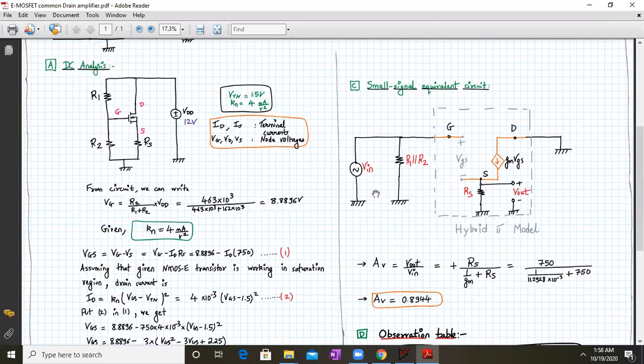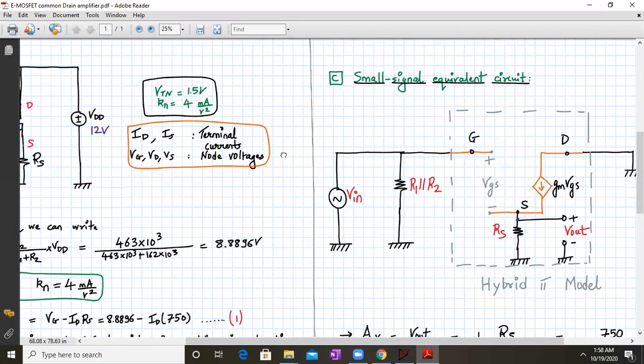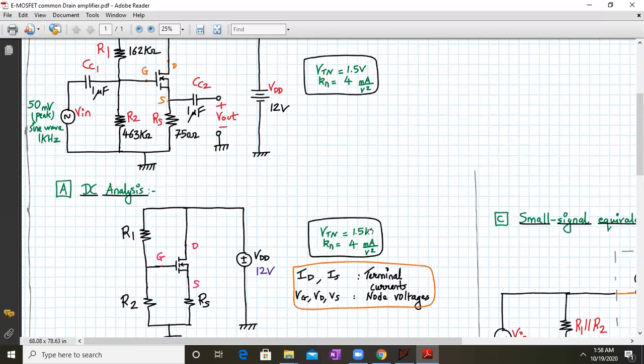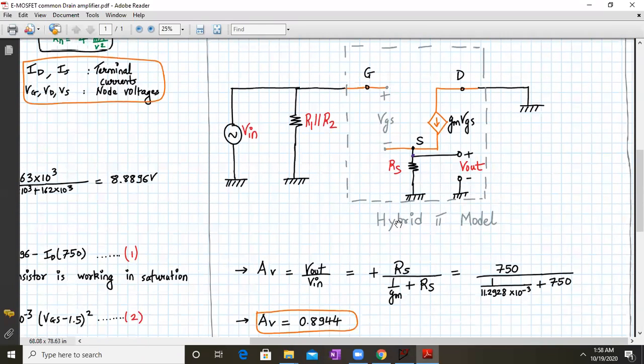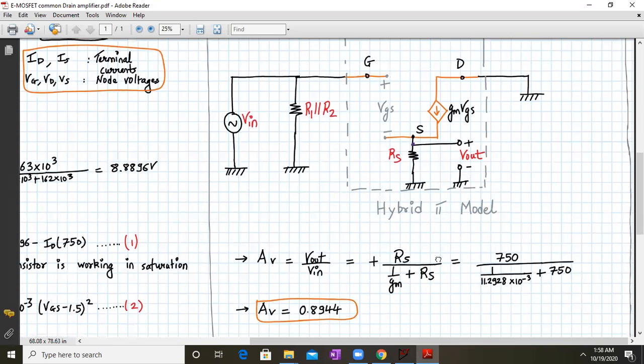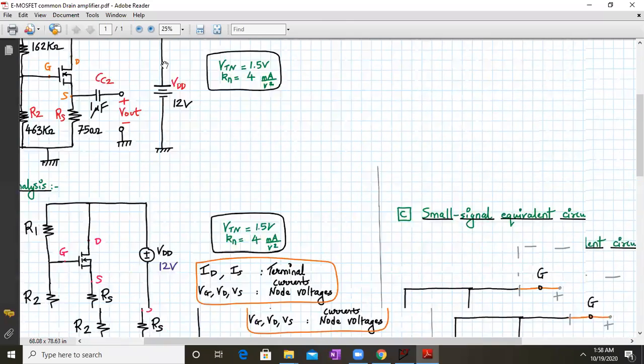Next we draw the small signal equivalent circuit. Since MOSFET has very high input impedance, in the small signal model the gate and source terminals are open circuited and marked with voltage Vgs. At the output side between drain and source, we have gm×Vgs. The input is applied to the gate and the output is taken from the source across resistor Rs. This is the mid-frequency hybrid-pi model where all capacitors are short-circuited.